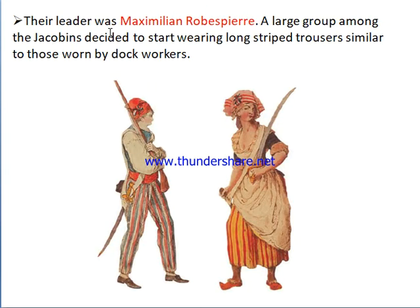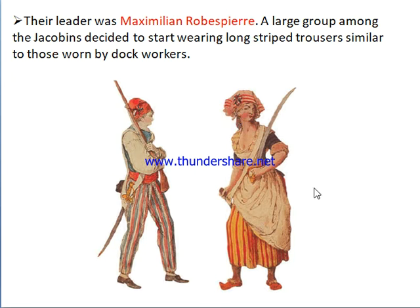As a result, the leader of the Jacobin Club, Maximilien Robespierre, became very famous. A large group among the Jacobins decided to start wearing long striped trousers similar to those worn by dock workers — they were called sans-culottes. Robespierre became highly famous, and the Jacobin Club gained support from people across all sections of society.